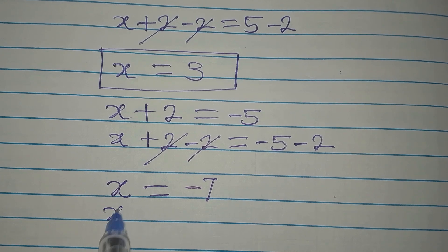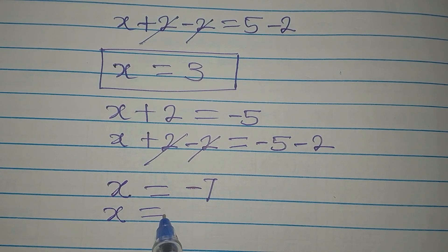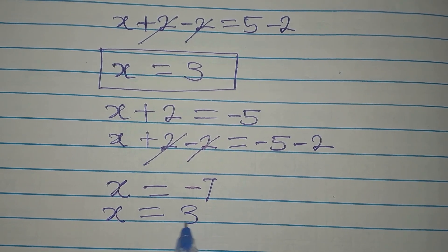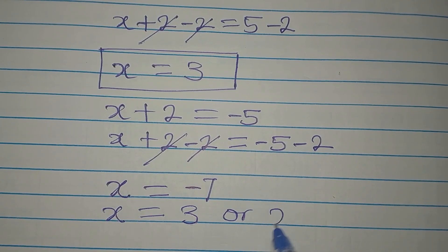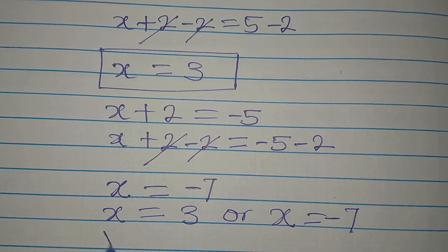So let's write x is equal to the first one which is 3, or x is equal to negative 7. But like we always do, we verify our work.